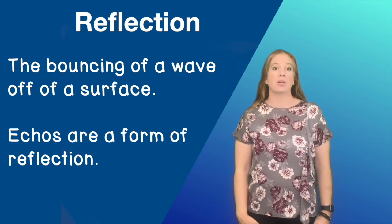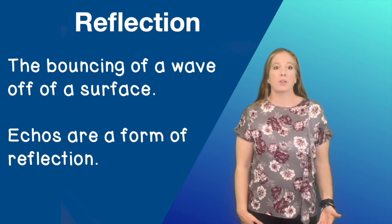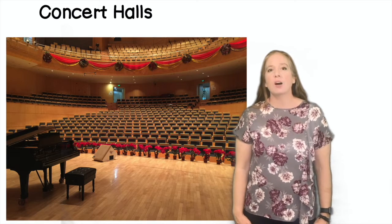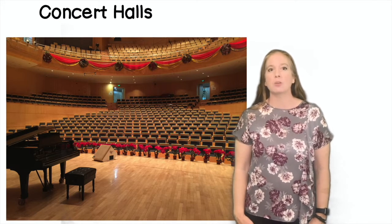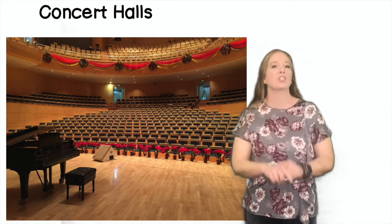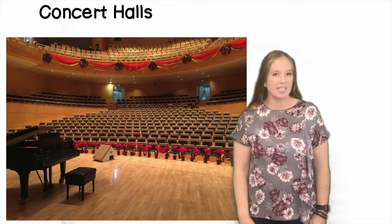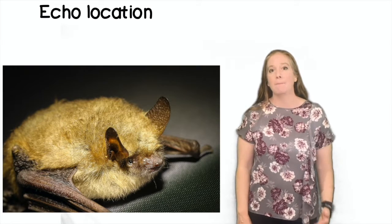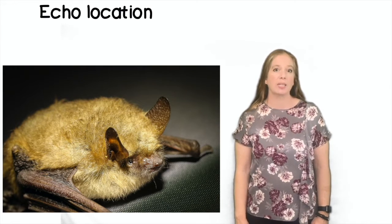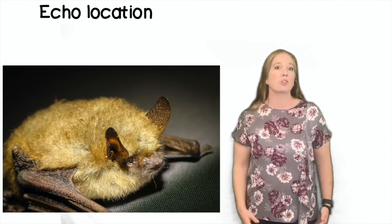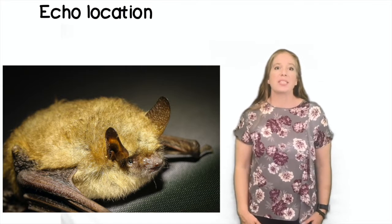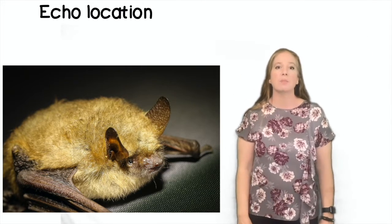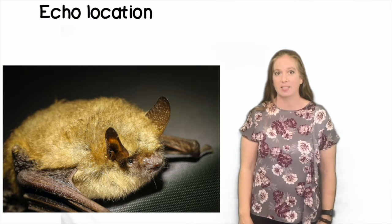Reflection is the bouncing of a wave off a surface. Echoes are a form of reflection. Concert halls are designed so that the music reflects off the walls to enhance the listening experience of the audience. Some animals like bats use echolocation to observe their surroundings and find food — the sound bounces off objects and returns to the bat, giving them the location of where an insect is.